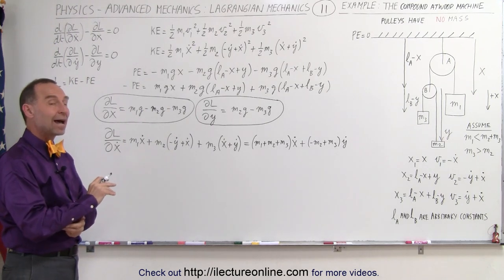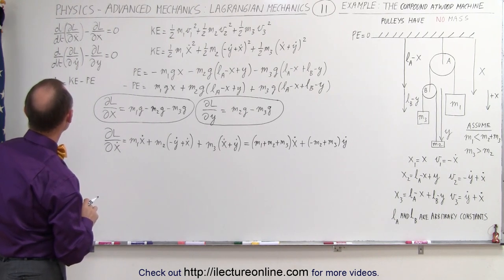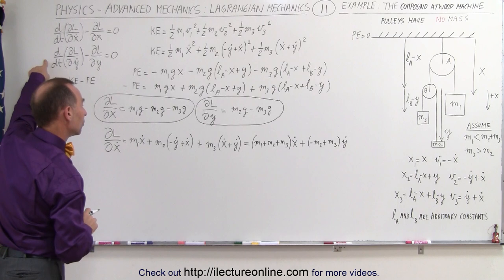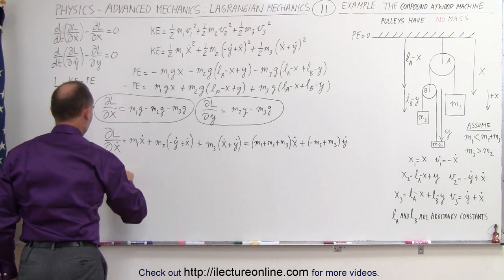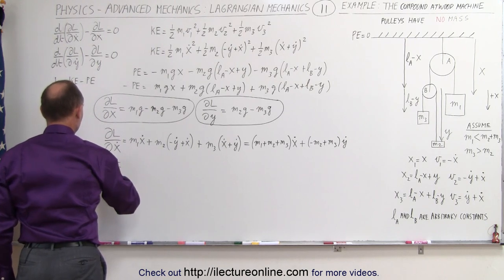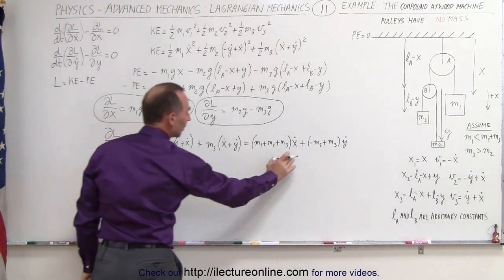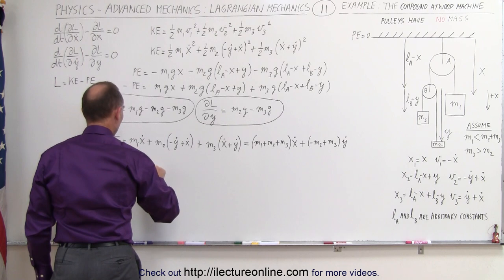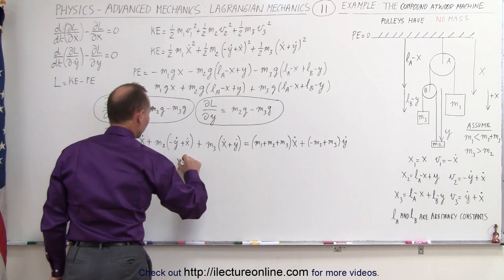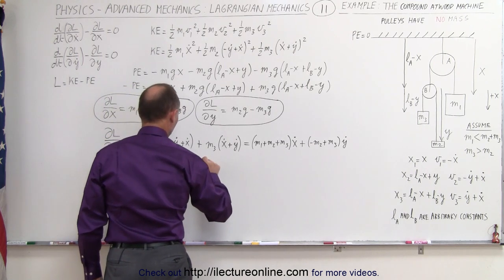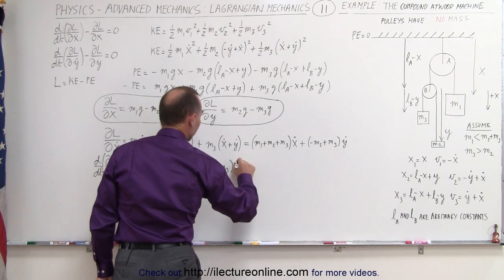Taking the time derivative of ∂L/∂x-dot gives: d/dt(∂L/∂x-dot) = (M1 + M2 + M3)·x-double-dot + (M3 minus M2)·y-double-dot.